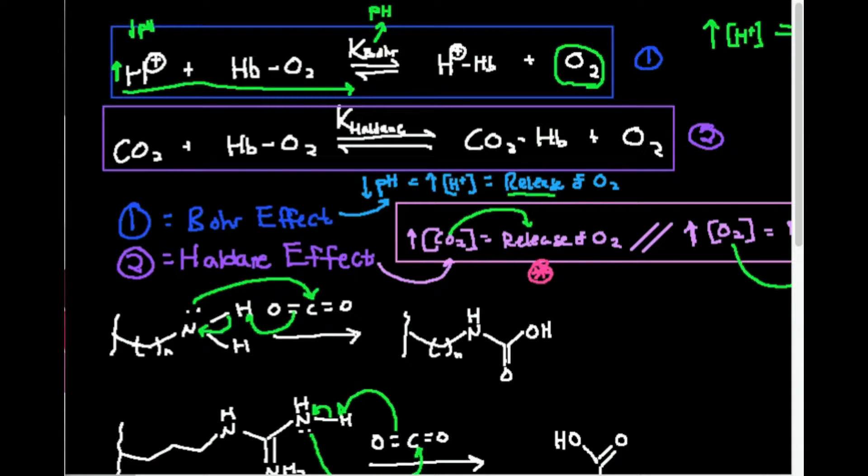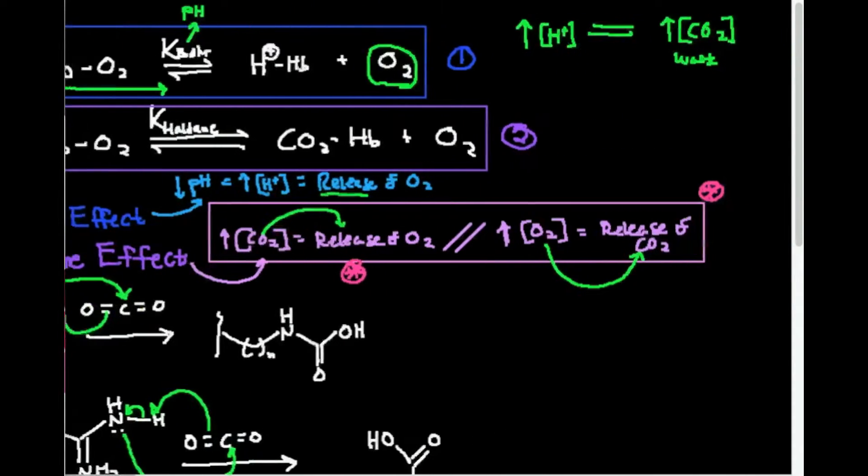Because the solution, which is the blood, has a pH. So oxygen cannot cause hydrogen ions to just leave. It's the pH that causes the equilibrium to shift. The Haldane effect is different.